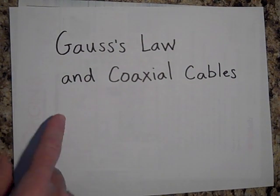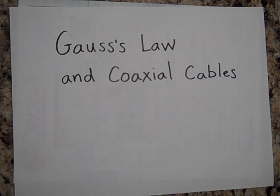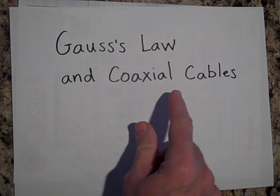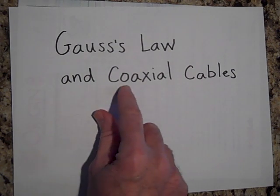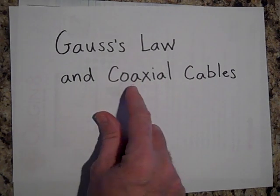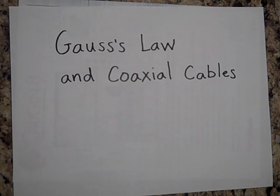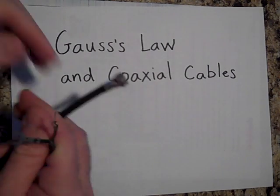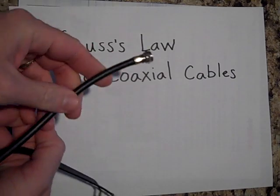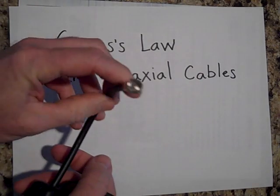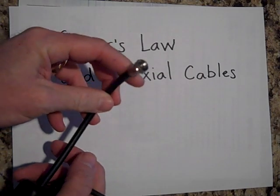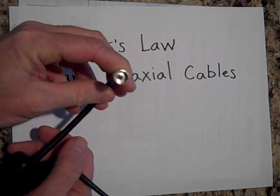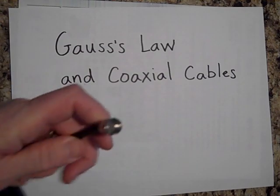I want to tell you about Gauss's law and coaxial cables. Coaxial cables means there are two cylinders — or a wire and another cylinder — that are on the same axis. They're coaxial; they have the same axis. This is a coaxial cable — you use them all the time. That's what you might hook up your television set to get cable television.